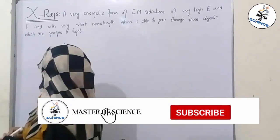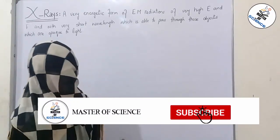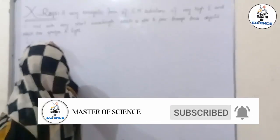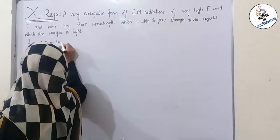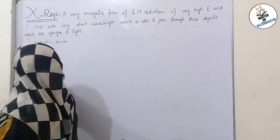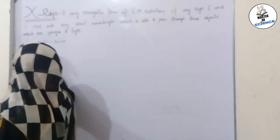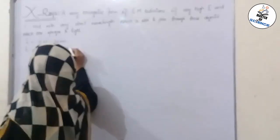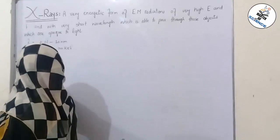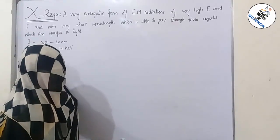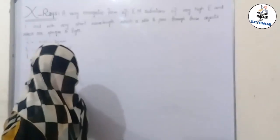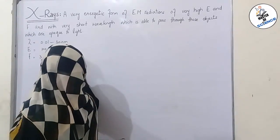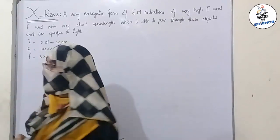Now I will tell you about its wavelength. Its wavelength ranges from 0.01 to 10 nanometer. Its energy ranges from 100 electron volt to 100 kilo electron volt, and its frequency ranges from 3 into 10 power 16 to 3 into 10 power 19 hertz.